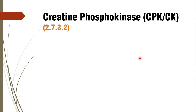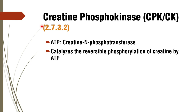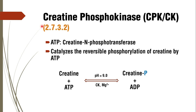The first enzymatic marker is creatine phosphokinase, also called creatine kinase — CPK or CK. Its enzyme classification number is 2.7.3.2 and its scientific name is ATP-creatine phosphotransferase. It catalyzes the reversible phosphorylation of creatine by ATP. Magnesium ions are required; the optimum pH is 9.0 for forward reaction and 6.7 for reverse. The products are creatine phosphate and ADP.